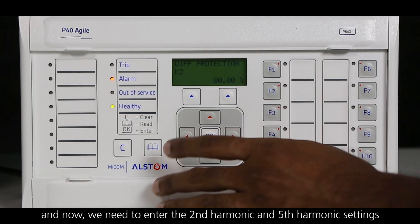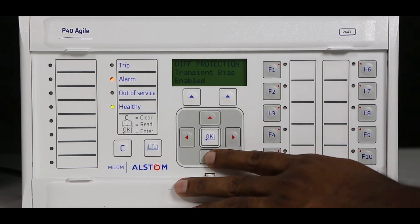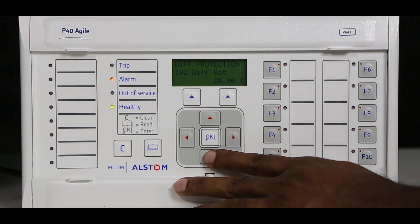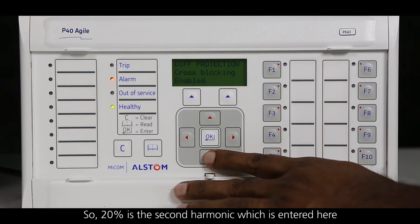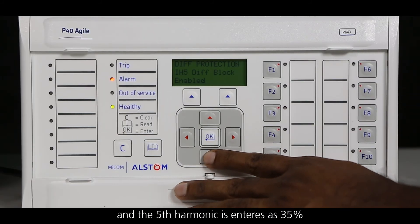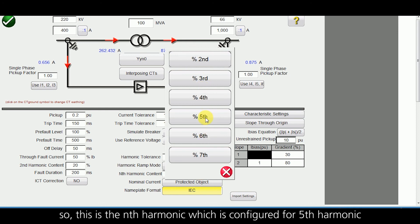Now we need to enter the second harmonic and fifth harmonic settings. 20 percent is the second harmonic which is entered here, and the fifth harmonic is entered as 35 percent. This is the nth harmonic settings which is configured for fifth harmonic.